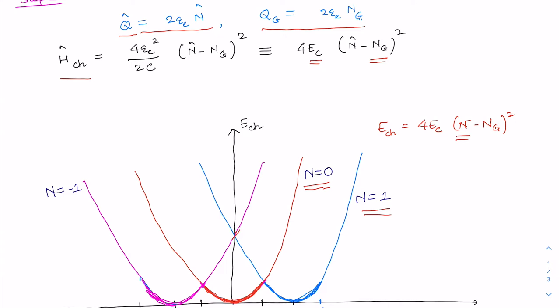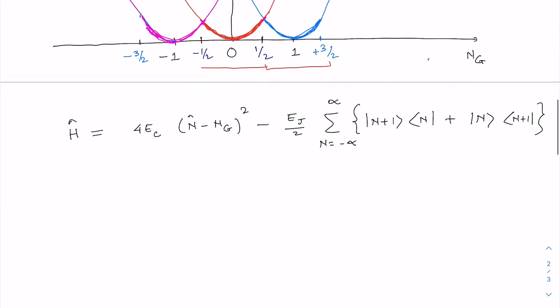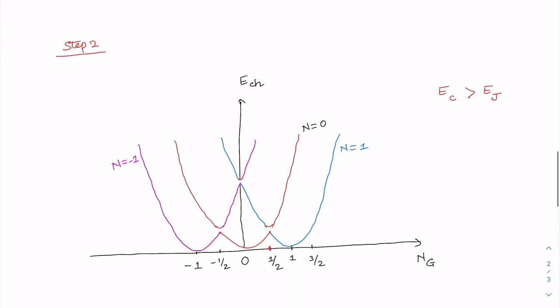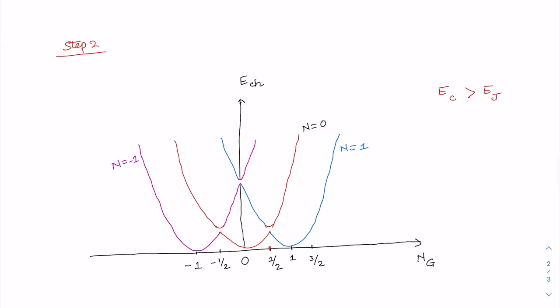In the second step, we switch on the perturbation. That means we consider the second term in the Hamiltonian, and we must have charging energy greater than the Josephson energy. As we discussed in module 1, the energy states no longer cross each other — they simply turn into avoided crossings. The energy levels no longer cross; this is what we mean by avoided crossing.